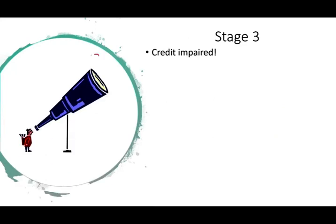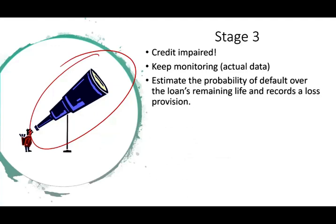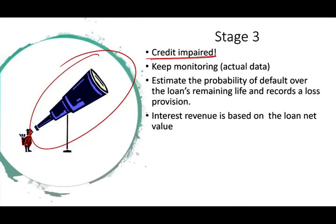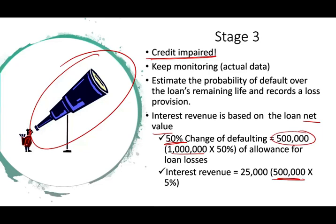Stage 3 is called credit impaired. Here you have more information — current and past data — and you estimate the probability of defaulting over the remaining life, recording the loss if the situation is deteriorating. What changes in Stage 3 is that your interest revenue is now based on the net value of the loan. If there's a 50% chance of defaulting on a $1,000,000 loan, you book $500,000 of losses. What's left — the $500,000 you will collect — is the basis for interest revenue, computed at 5%, giving interest revenue of $25,000.